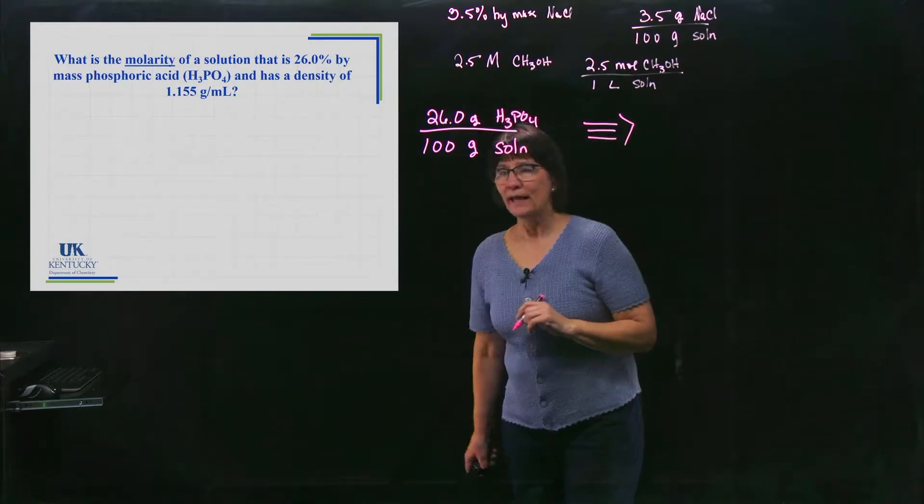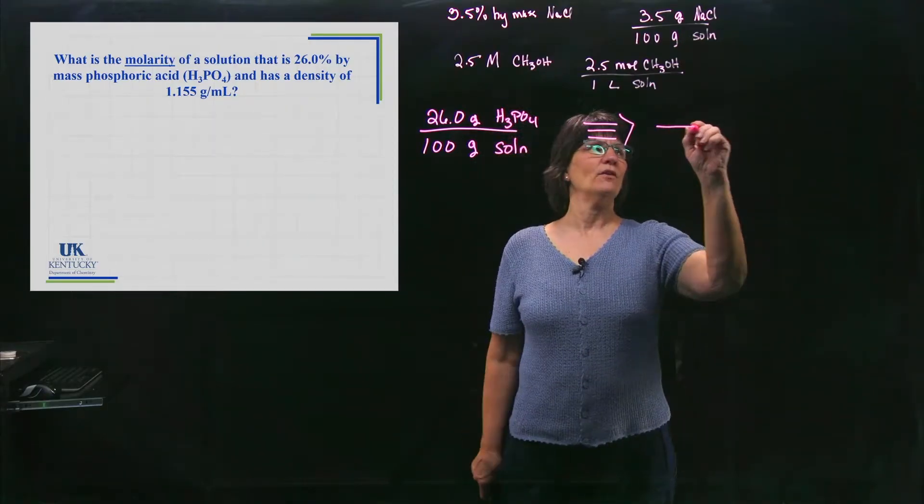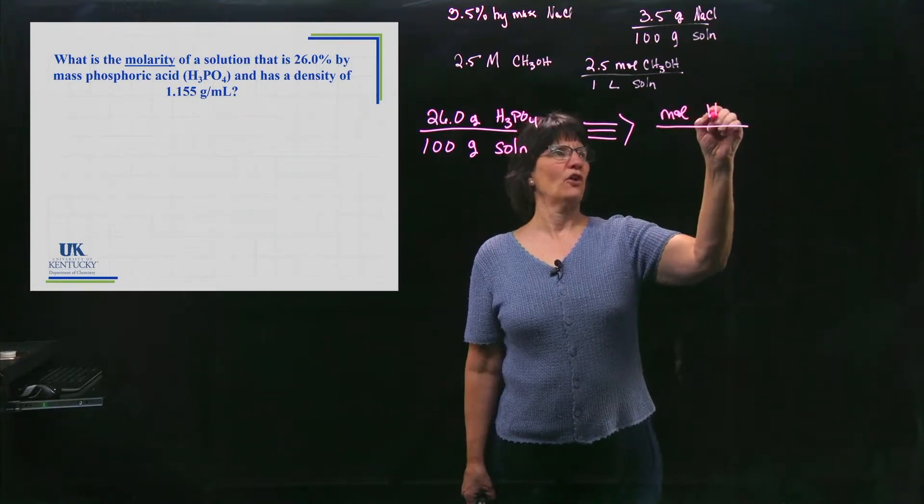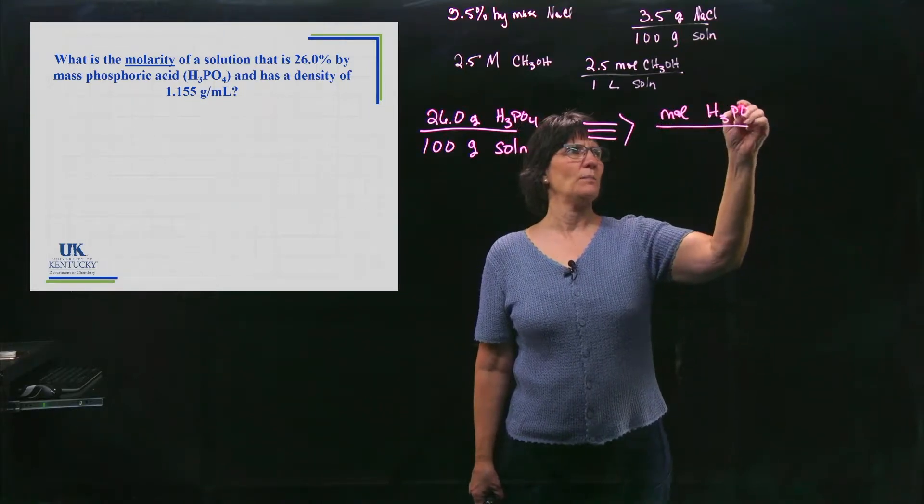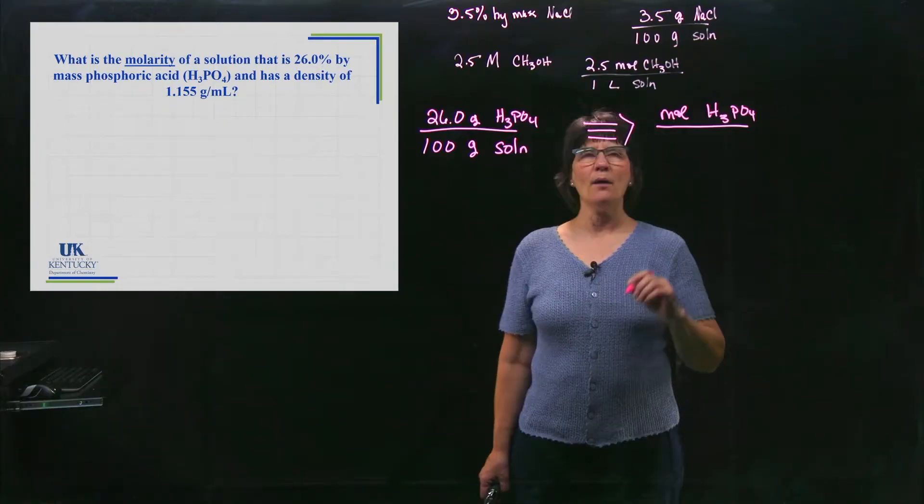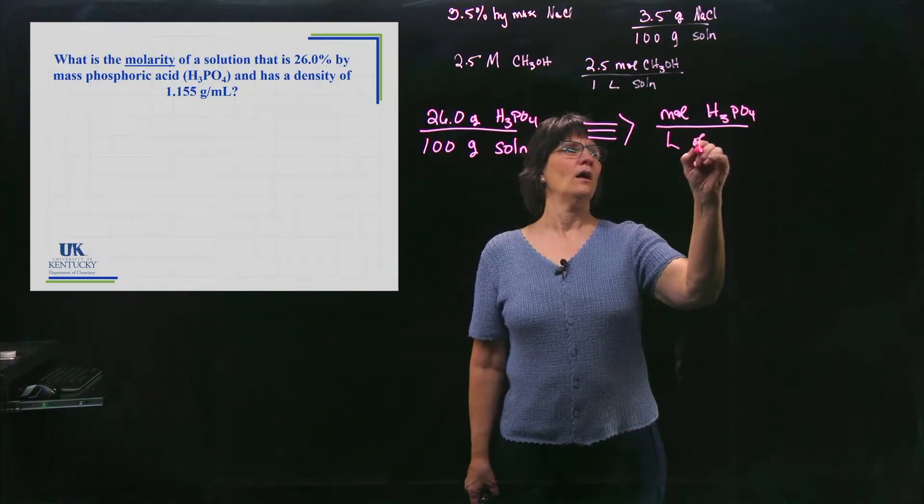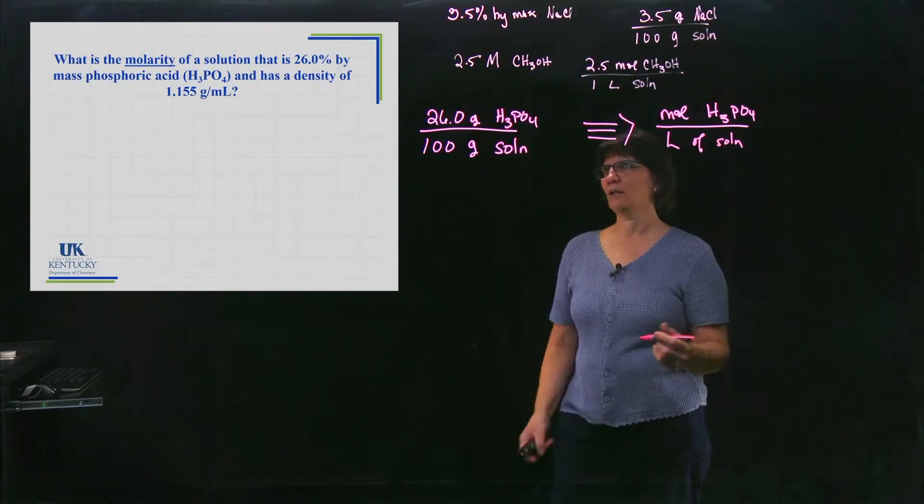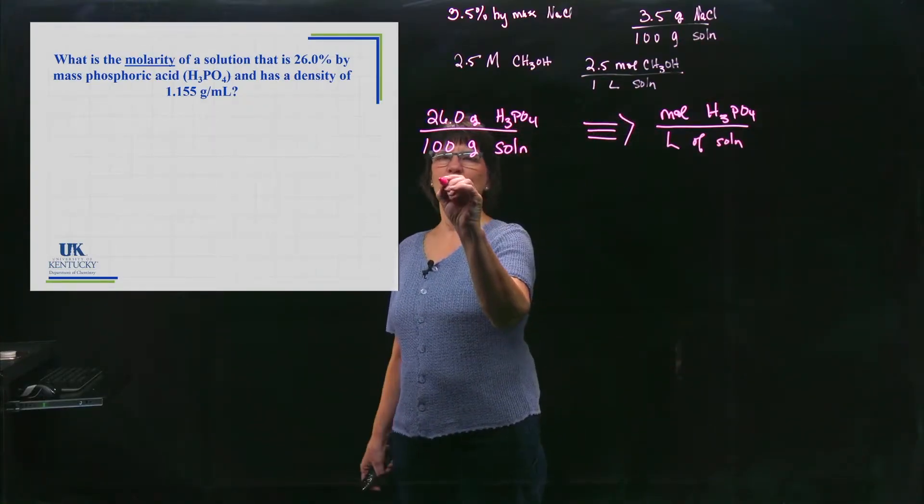And where am I trying to go? It's wanting molarity. So I tell myself, what's molarity? It is moles of the solute, in this case H3PO4. And the denominator is liter of solution. So now I know where my numerator needs to go and where my denominator needs to go. And I'm going to work with them separately.